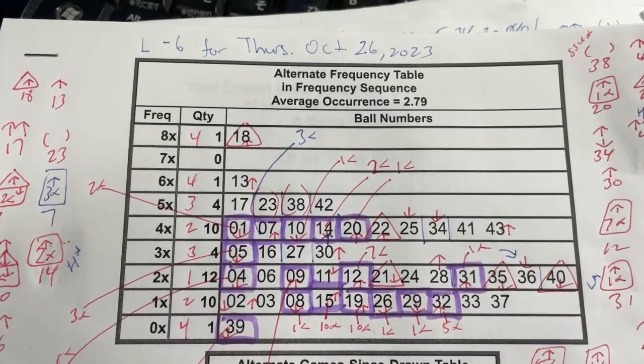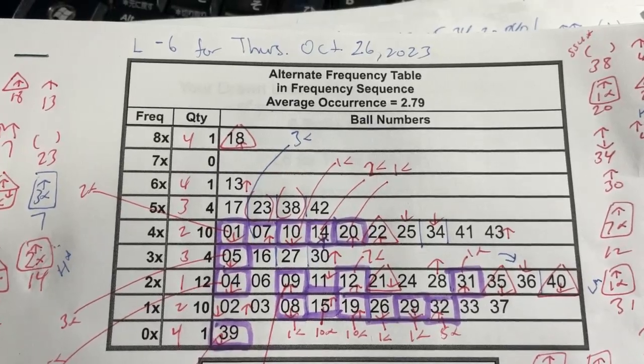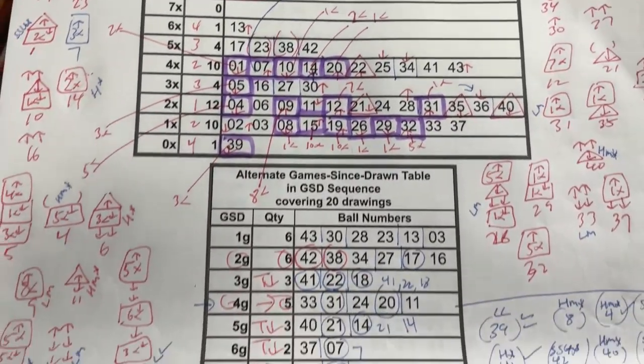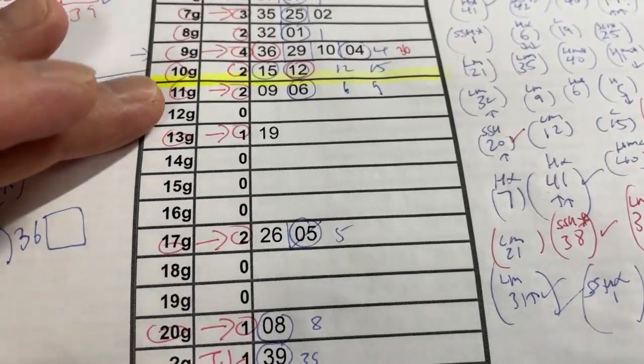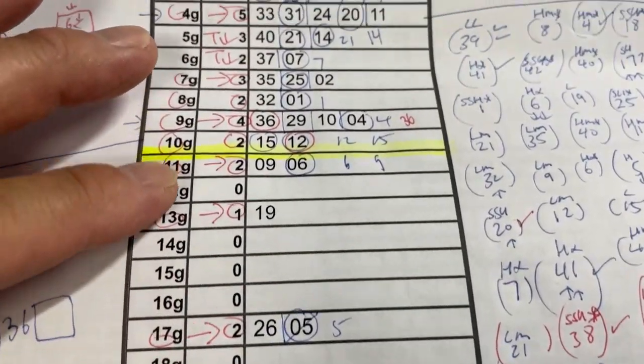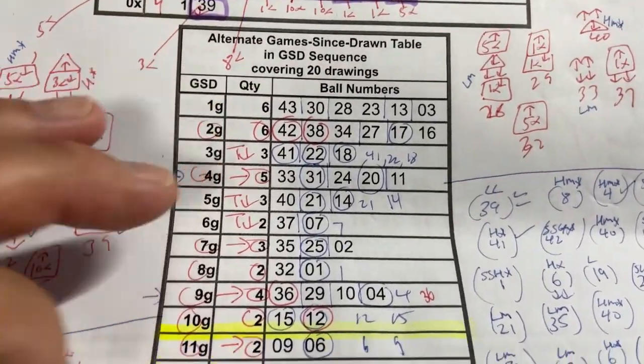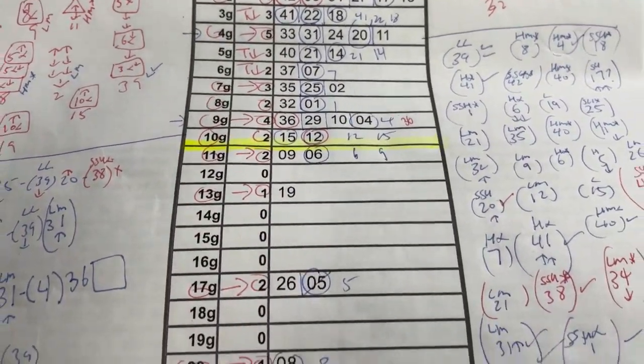You're looking at my Lotto 6 worksheet for Thursday, October 26th. I've been working very hard trying to find the best numbers for us. Anything below this yellow line are considered cold numbers, and anything above it are warm to hot numbers. I usually choose at least one cold number.